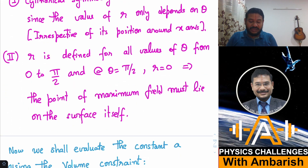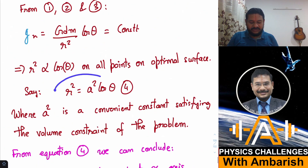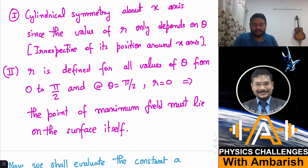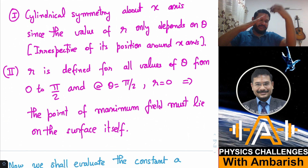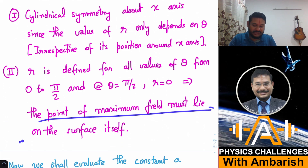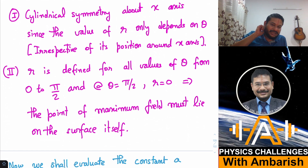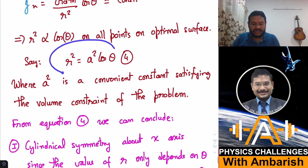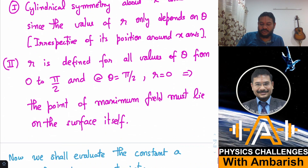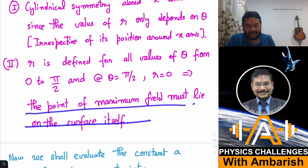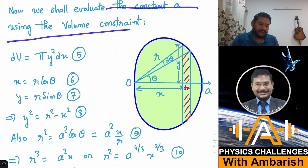The surface is defined for θ from −π/2 to +π/2. Importantly, when θ = π/2, r = 0, which means the origin O — the point where we want to maximize the field — lies on the surface itself. The point of maximum field must lie on the surface, since its distance from the origin is zero.